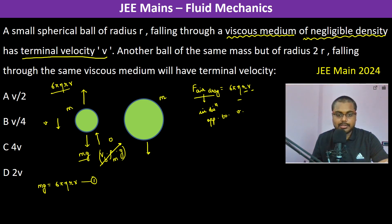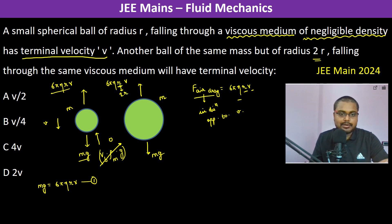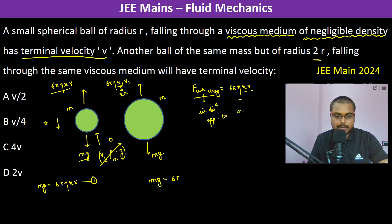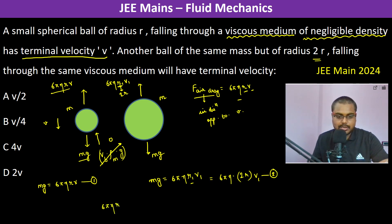Now for another ball, also of mass m, the weight is still mg, but the radius has increased to 2r. Let the new terminal velocity be v1. Setting up the equation: mg = 6π η r1 v1, where r1 = 2r. Substituting: 6π η r V = 6π η (2r) v1. Cancelling 6π η and r from both sides gives v1 = V/2.